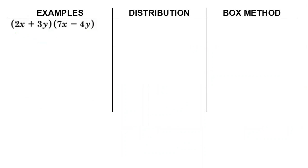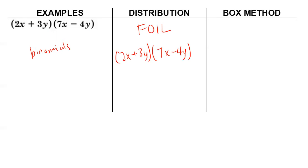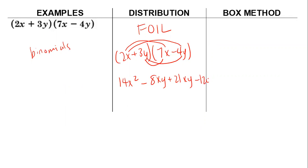Here we have a binomial times a binomial, two binomials. We're going to distribute using the FOIL method. We have 2x plus 3y times 7x minus 4y. First: 14x squared. Outside: negative 8xy. Inside: 21xy. Last: negative 12y squared. Combining like terms, we have 14x squared plus 13xy minus 12y squared.